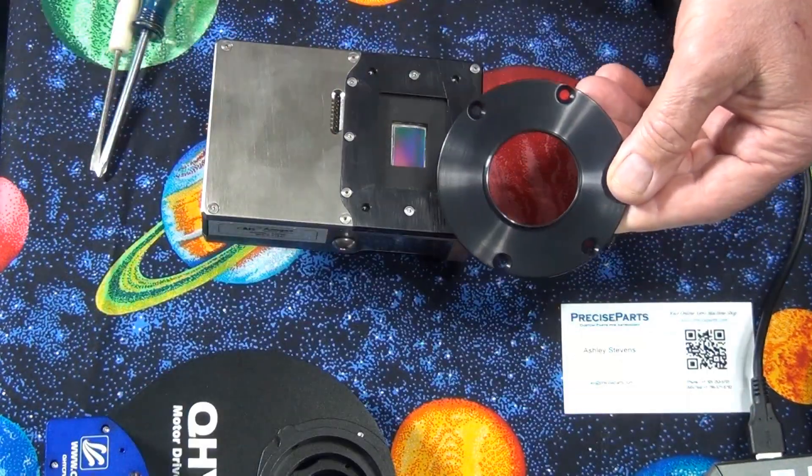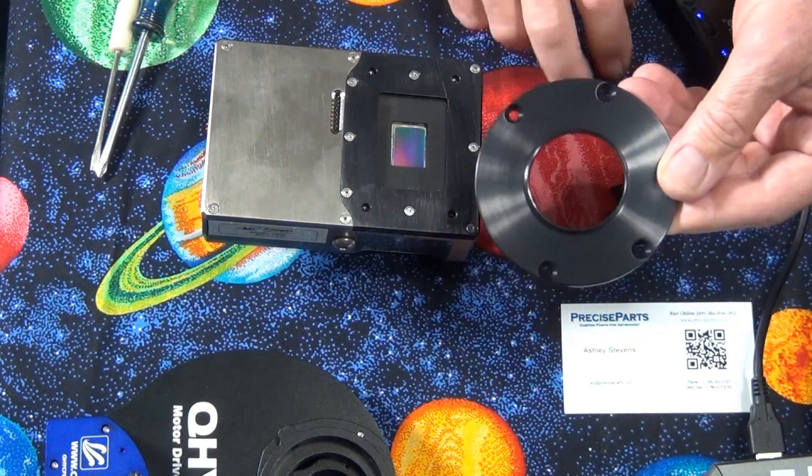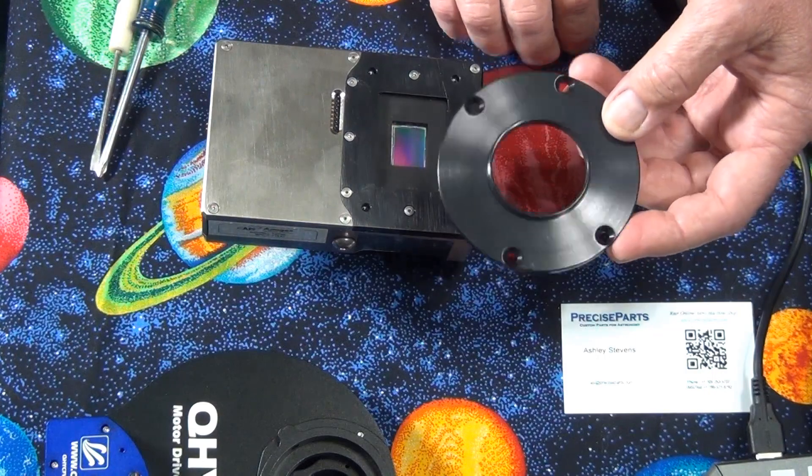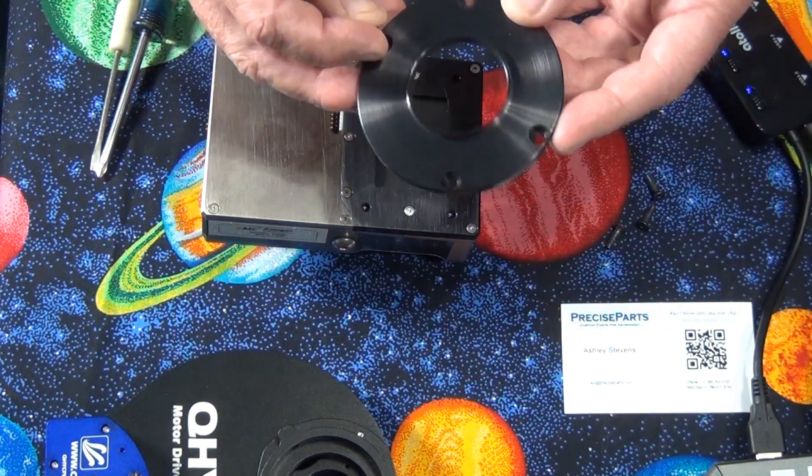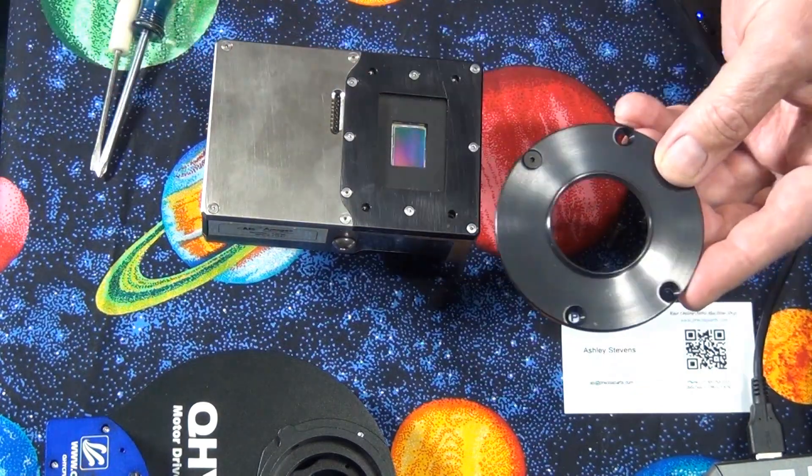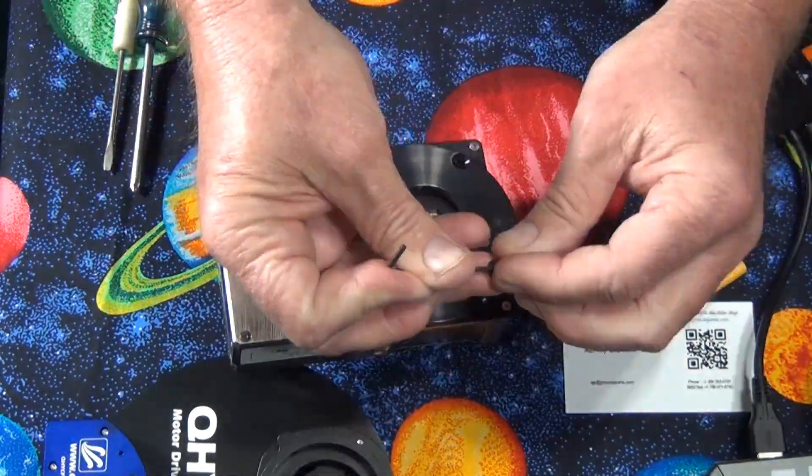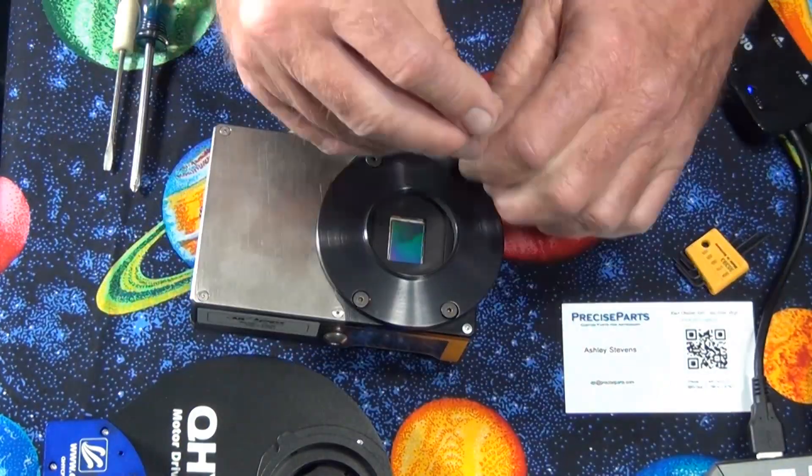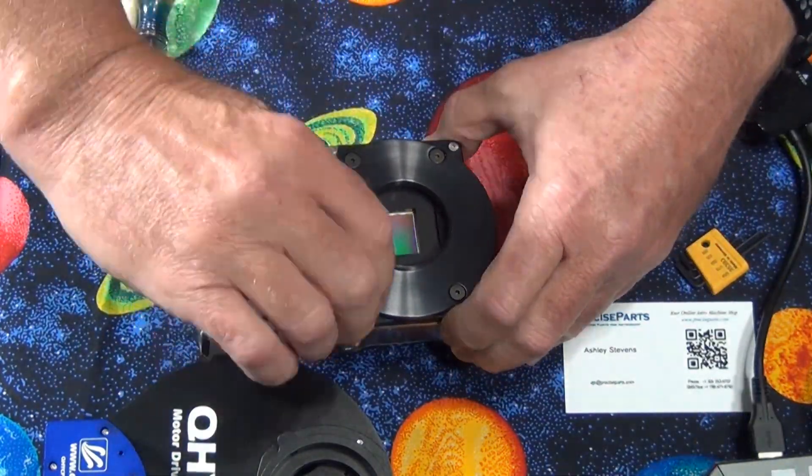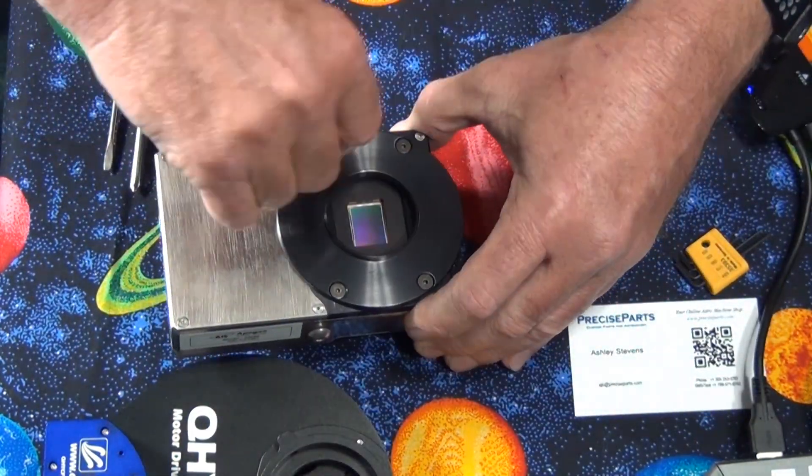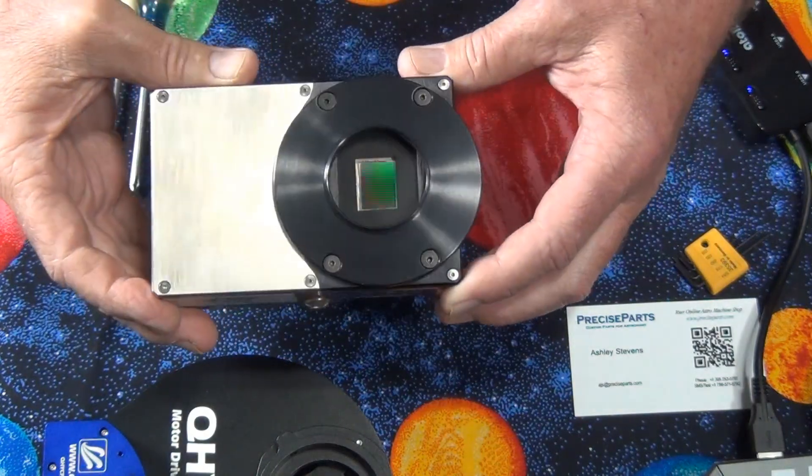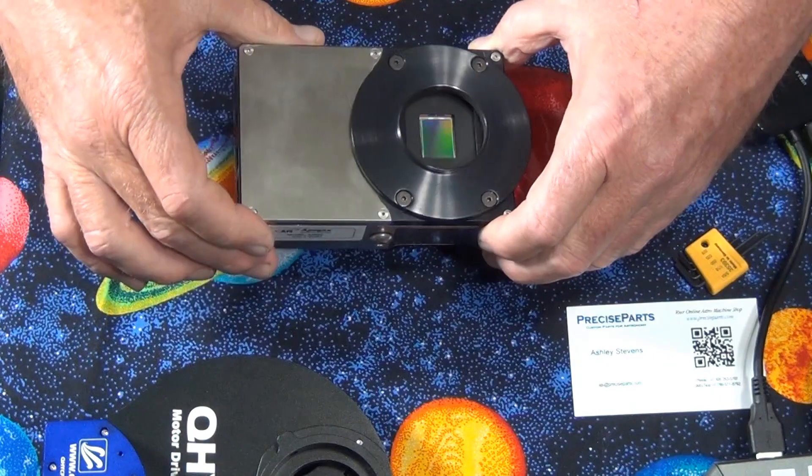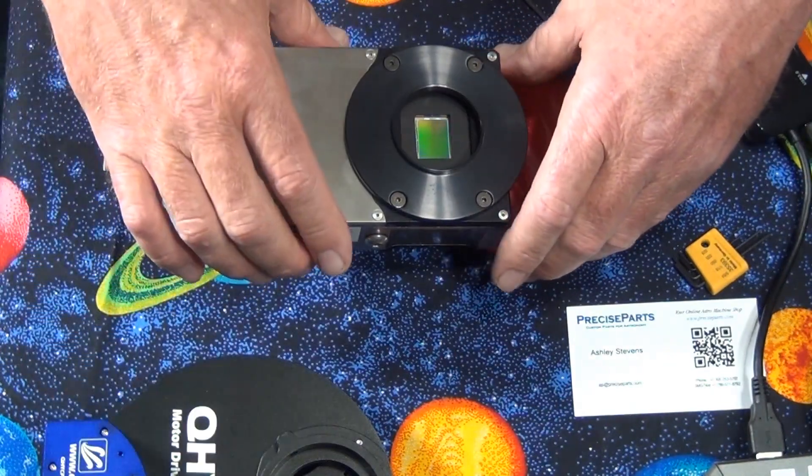The adapter did come with some screws, but the screws that they sent with it were way too short. So I'm going to use the screws from the old filter wheel. Fitting the adapter onto the camera has fit, as promised. Now let's try to attach it to the filter wheel.